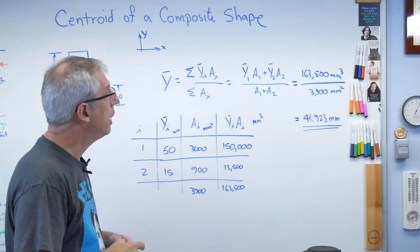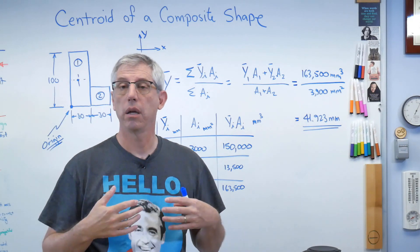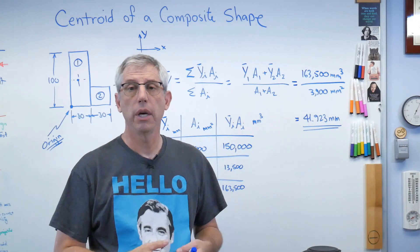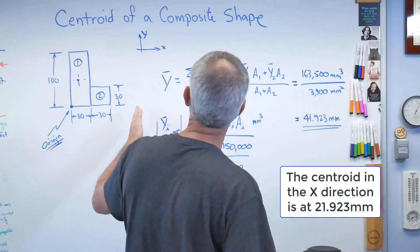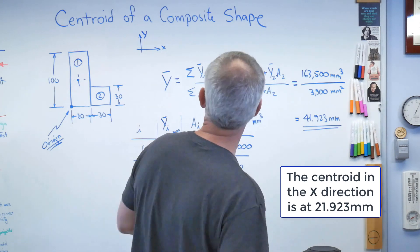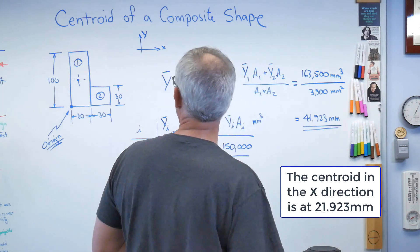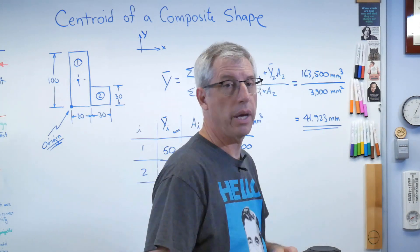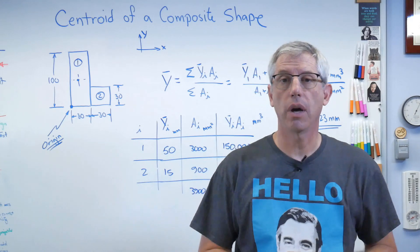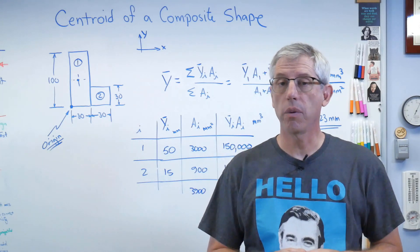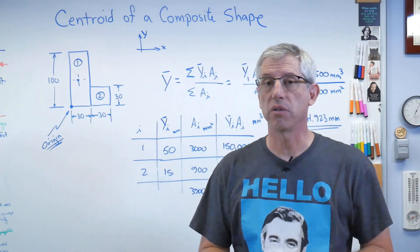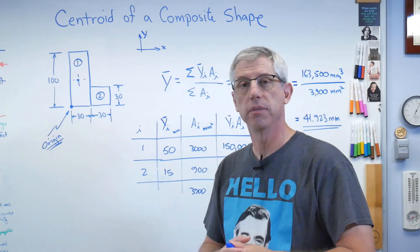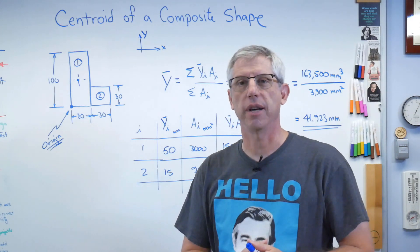If you want to do this for the horizontal direction, just repeat everything in terms of x instead of y — looking at x locations of centroids rather than y locations. It works the same way. Hope this helps. We'll talk to you next time.